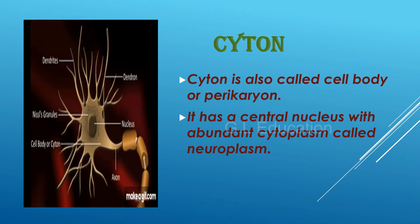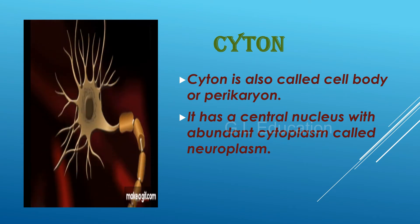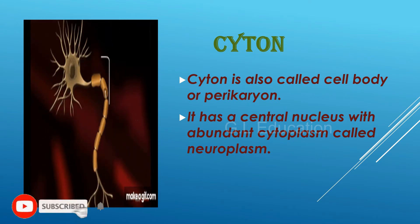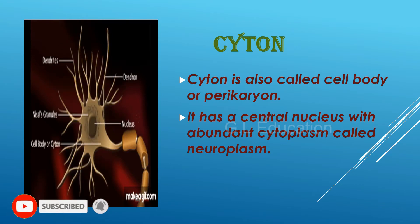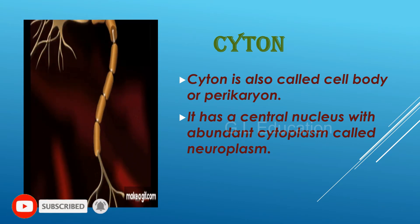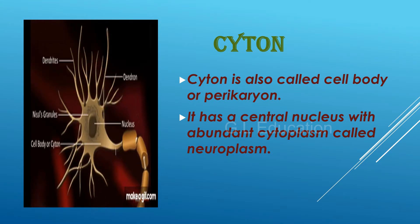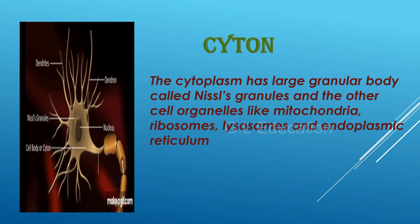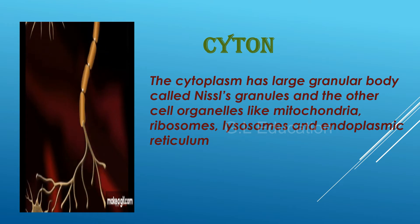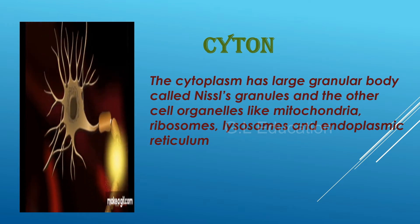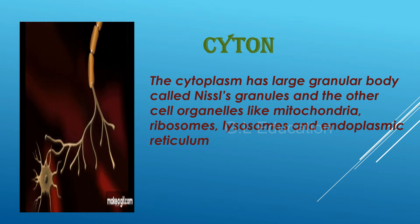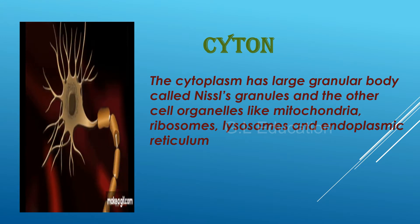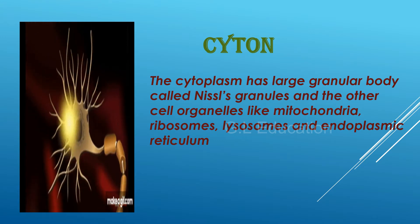Cytone is also called cell body or perikaryon. It has a central nucleus with abundant cytoplasm called neuroplasm. The cytoplasm has large granular bodies called Nissl's granules and other cell organelles like mitochondria, ribosomes, lysosomes and endoplasmic reticulum.